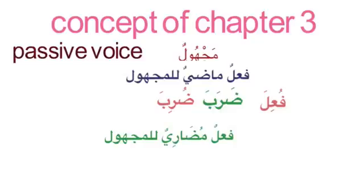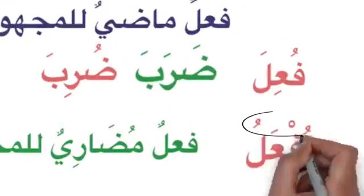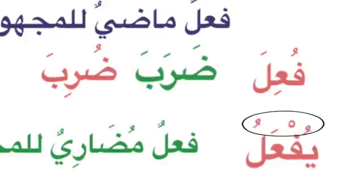Today inshallah we are going to learn about fi'l mudhari lil-majhul. So what is the present tense? If you see the present tense it is in the pattern of yuf'alu. So what do we say here? The alamat mudhari is having a damma, and the ayin kalima has got a kasra. That is the striking feature.